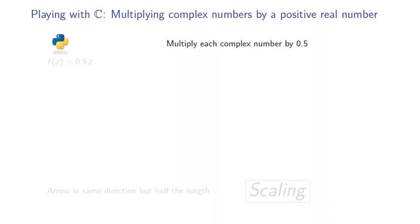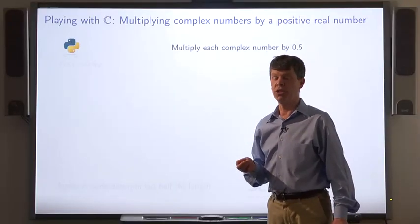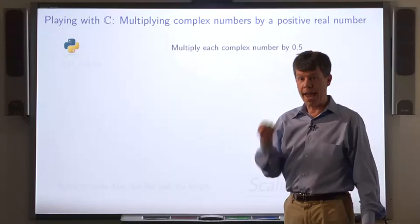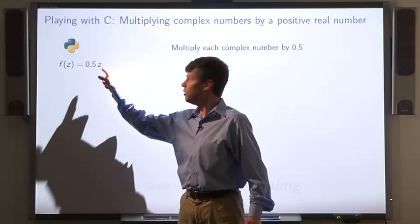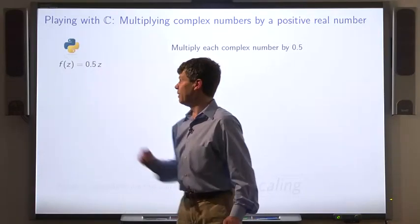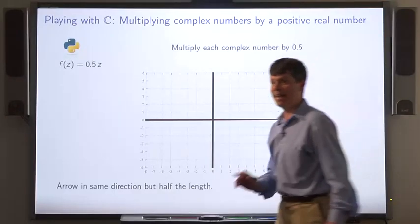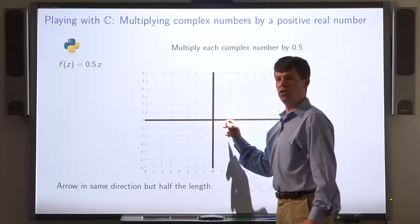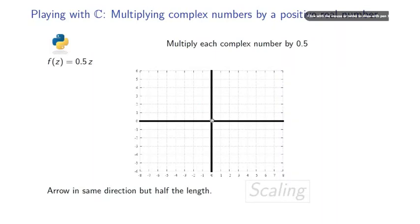Consider the operation of multiplying a complex number by 0.5. What's the geometric interpretation? How does this affect arrows representing complex numbers? So we're applying the function f of z equals 0.5 times z. Let's say we start with a complex number 2 plus 4i. We represent that by an arrow that moves 2 units to the right and 1, 2, 3, 4 units up. So this arrow.